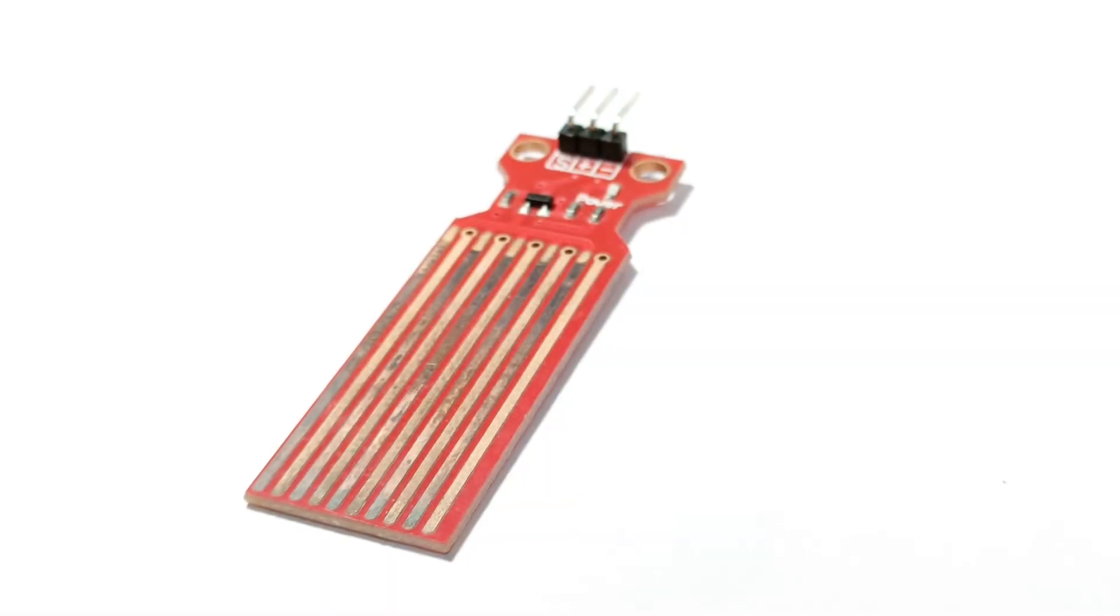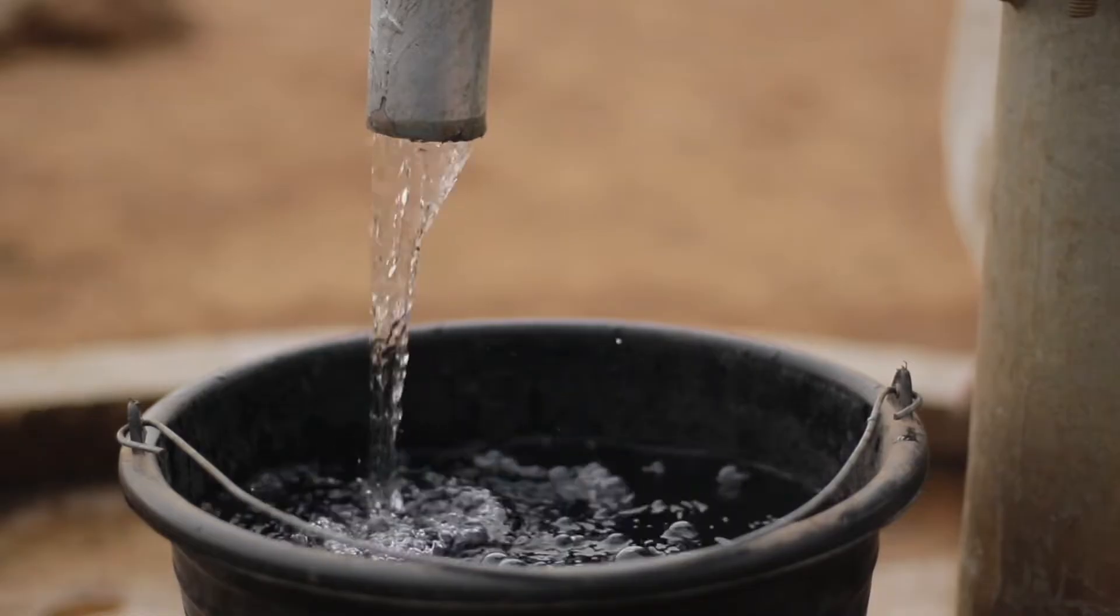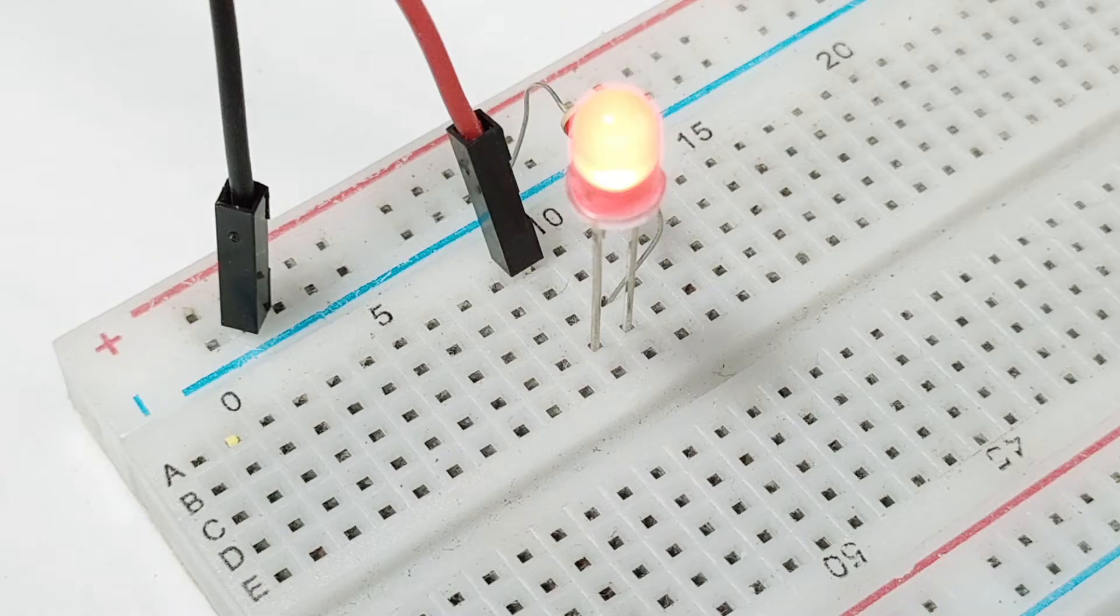Welcome back to our channel. Today we're diving into a practical and fun Arduino project, using a water level sensor to monitor the water level in a tank or any container. We'll also add a simple LED indicator to alert us when the water reaches a certain level. Let's get started.